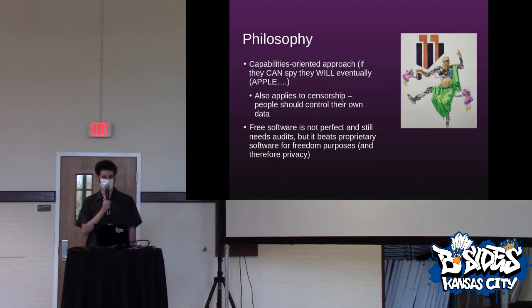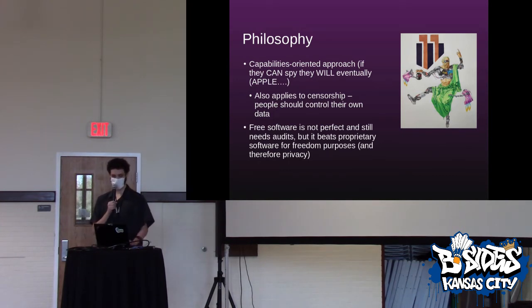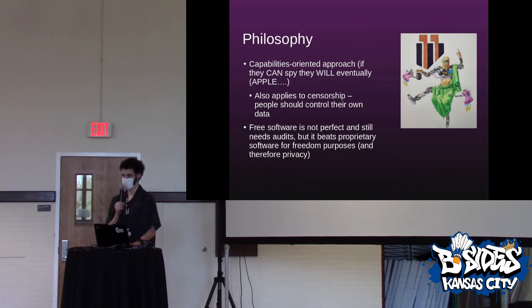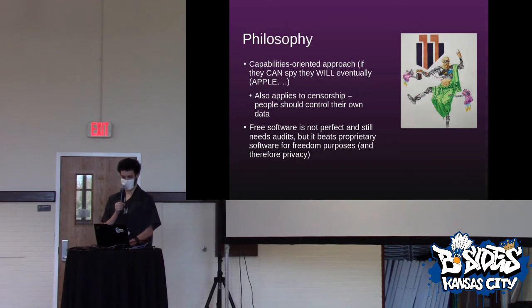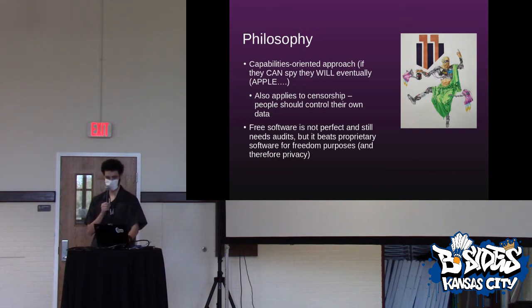My philosophy with security and privacy is pretty capabilities-oriented. There are a lot of companies out there — email providers and VPN providers — that say they don't log and they don't keep customer records beyond what's necessary. A lot of them are probably telling the truth, but the fact is if they're in a position to be able to start keeping that data, they probably will, or someone who compromises them probably will. I think that as a programmer I can help develop systems that help users keep control of their own data using heavy cryptography and peer-to-peer networking.